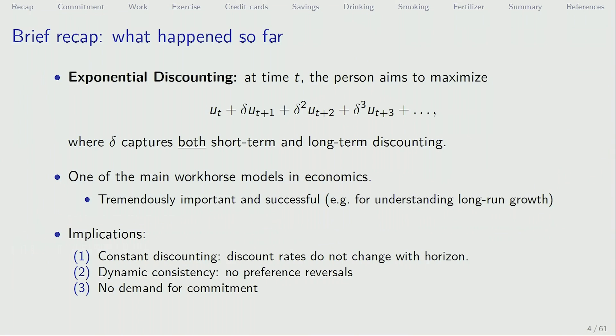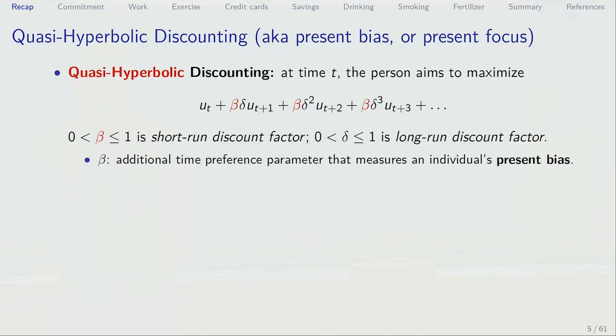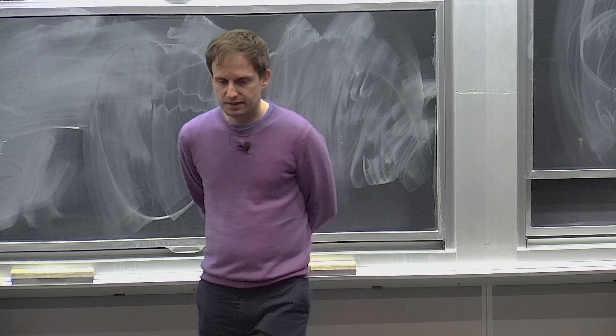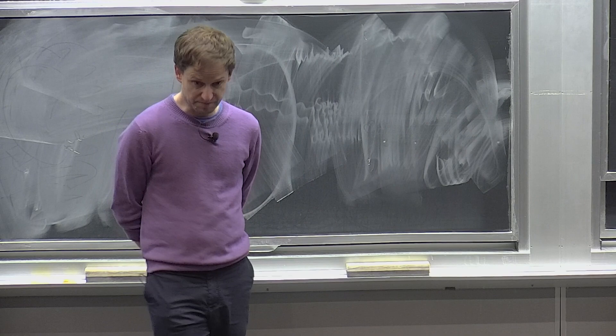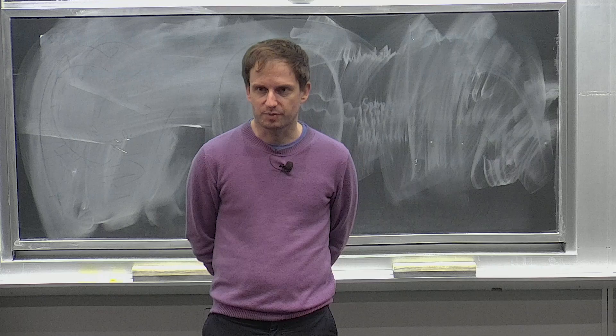It has different implications we discussed at length, both in class and in recitation: constant discounting, dynamic consistency, and no demand for commitment. We discussed some evidence that shows these implications are not warranted. Then we talked about an extension — the quasi-hyperbolic discounting model — which adds an additional parameter that measures people's present bias. This allows us to be more flexible and look at short-run and long-run discounting in the same model. There's one parameter, beta, that measures people's short-run discount factor, and another parameter, delta, which is close to 1, that measures the long-run discount factor.